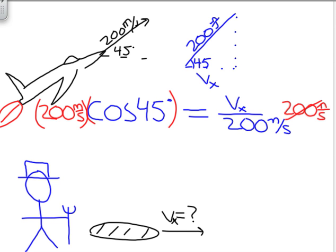And here, the 200 meters per second cancel. And I also know that cosine of 45 degrees is 1 over square root of 2. So, 200 meters per second multiplied by 1 over square root of 2 is equal to 141 meters per second.